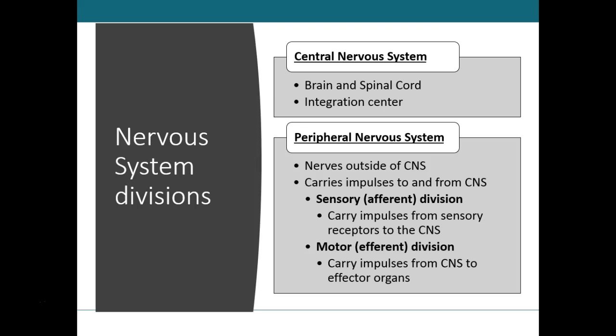The nervous system composes only about four and a half to five pounds, or three percent of your total body weight. It is one of the smallest but the most complex of all the body organ systems. This system is made up of billions of neurons and even more neuroglial cells, organized into two main divisions: the central nervous system and the peripheral nervous system.